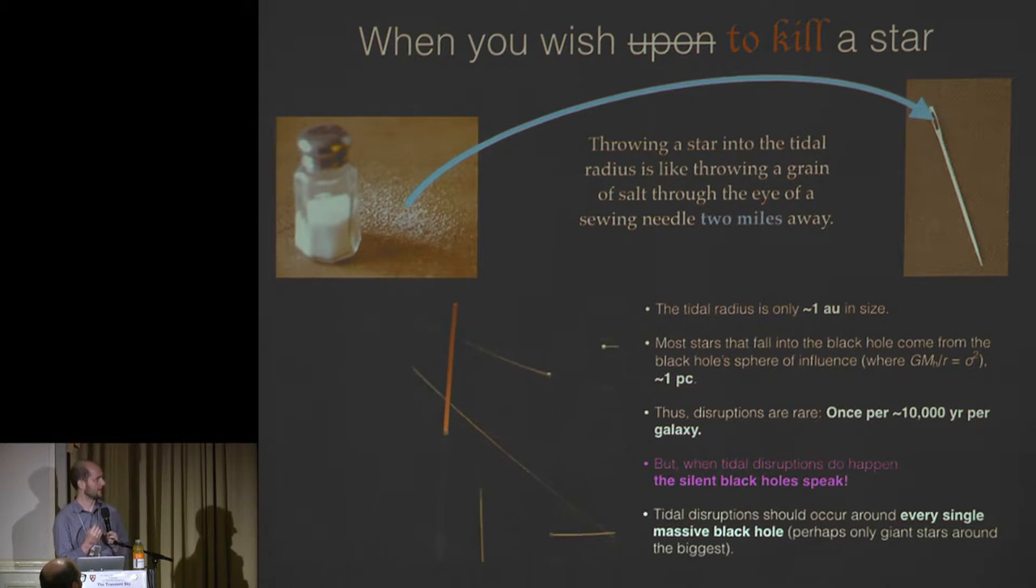So every single black hole is surrounded by a million or 10 million or 100 million stars. Each of those stars has an extremely tiny chance of being disrupted by the black hole because the tidal radius is so much smaller than the size of the cluster. The analogy I like is it's like throwing a grain of salt through the eye of a sewing needle two miles away. So it's very, very difficult to do this on a per-star basis. The advantage you have, though, is that there's so many stars, you multiply that probability by a large number, it actually turns out to be not that rare, something like once per 10,000 years per galaxy. And they should happen around every single massive black hole.